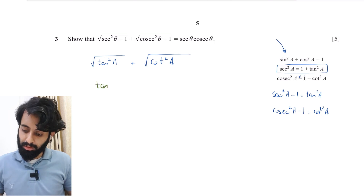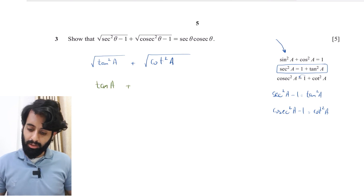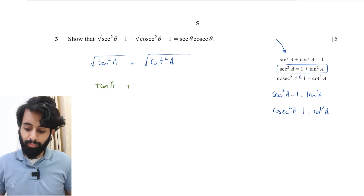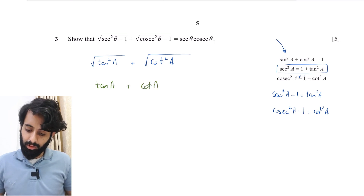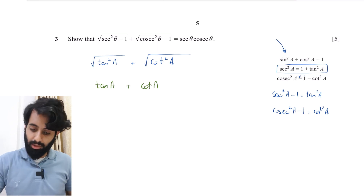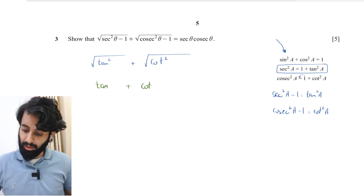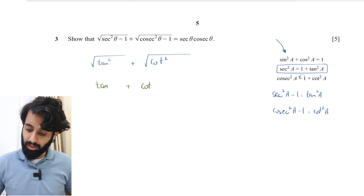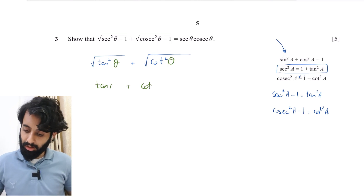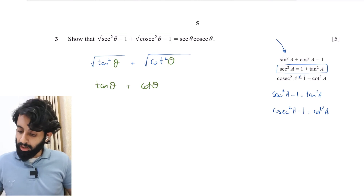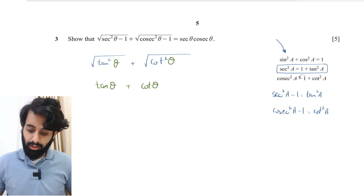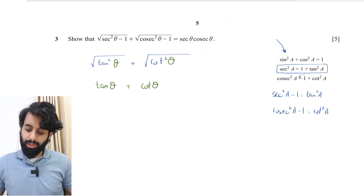Similarly, for cosec²θ − 1: we know cosec²a − 1 = cot²a, so √(cosec²θ − 1) = √(cot²θ) = cot θ. So our expression now simplifies to tan θ + cot θ. Let me replace a with θ throughout to keep notation consistent.